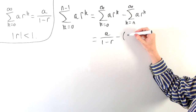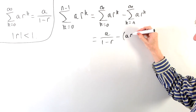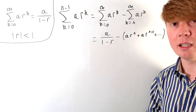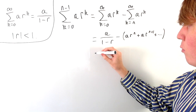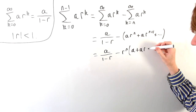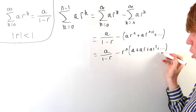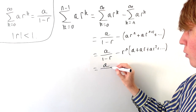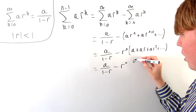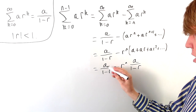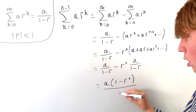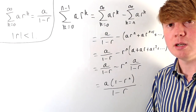For the second term, writing out the first few terms gives a r to the n plus a r to the n plus 1, and so on — starting with k equals n going up to infinity. Taking out a factor of r to the n, we get a over 1 minus r minus r to the n times (a plus a r plus a r squared and so on). That inner series is our original geometric sequence, so applying the formula again gives a over 1 minus r minus r to the n times a over 1 minus r. Factorising out a over 1 minus r, we end up with a times (1 minus r to the n) all over 1 minus r — the familiar partial sum formula.